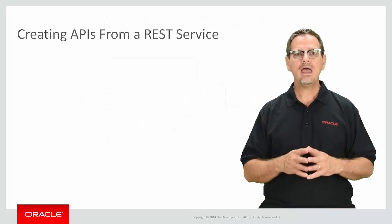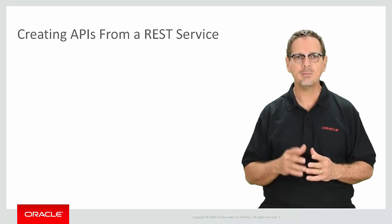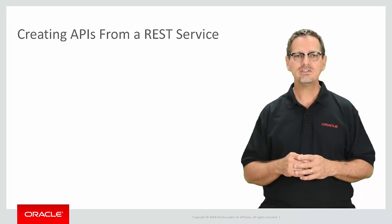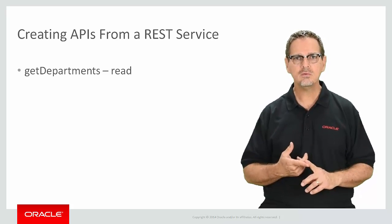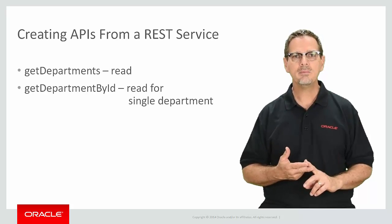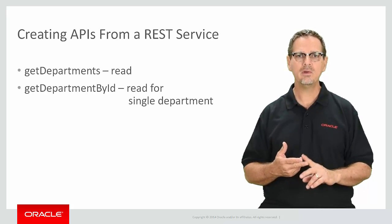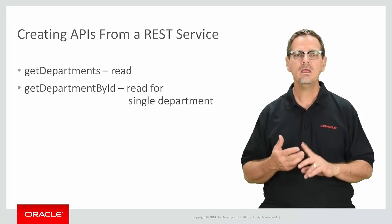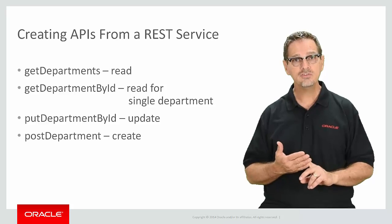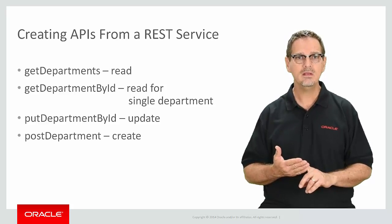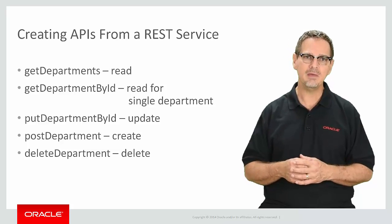Now that you have an idea of the process, let's take a look at creating APIs from a REST service. In our example, there are five main services: Get Departments, which is a read; Get Departments by ID, which is also a read but returns a single department; Put Department by ID, which is an update method; Post Department, which is a create method; and Delete Department by ID, which is a delete method.